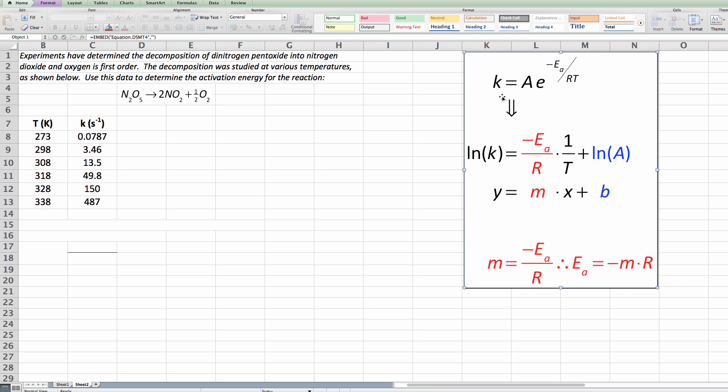So what we can do is we can take the natural log of both sides of this equation. So we get the natural log of K and then this e to the... remember that the natural log undoes that math so I get minus Ea over R times one over T.